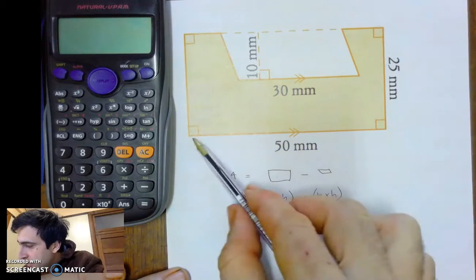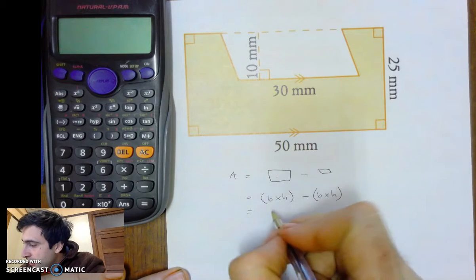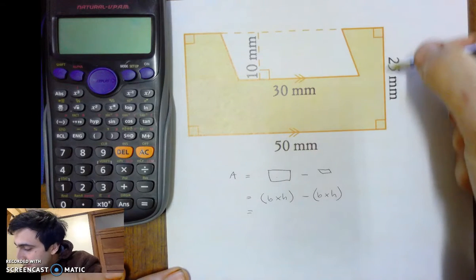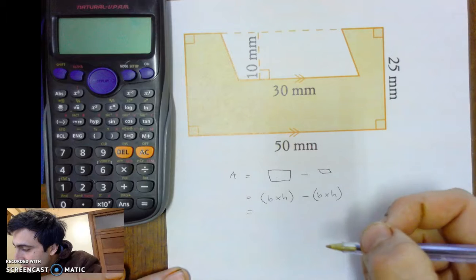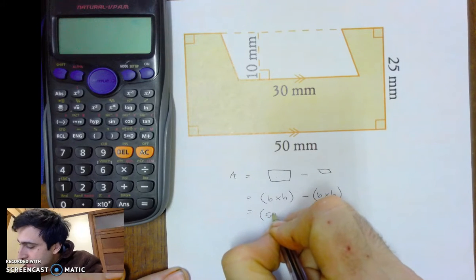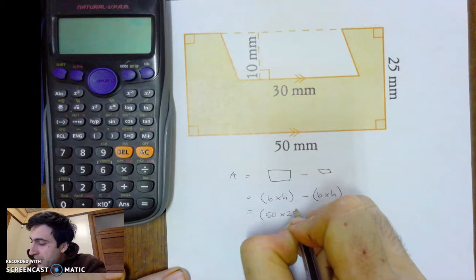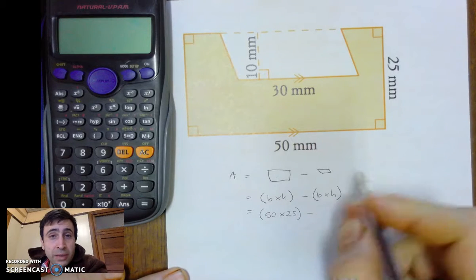What's the height? Oh, yeah. 25 millimetres. So, base times height is 50 times by 25 minus base times height of the parallelogram.